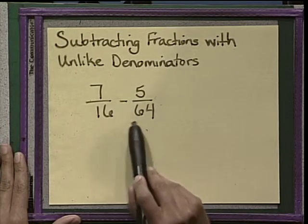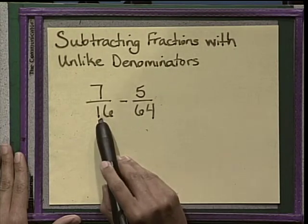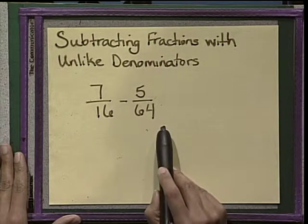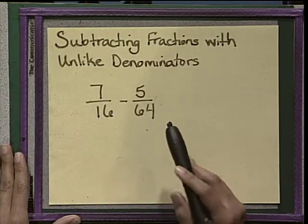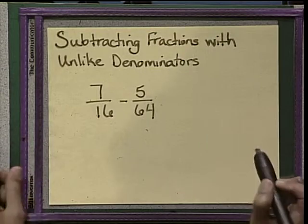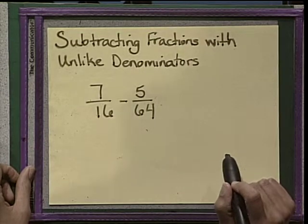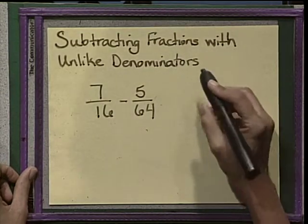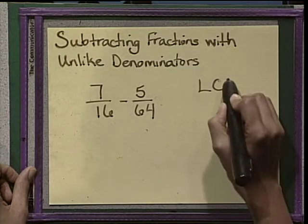These two denominators are different. One is 16 and one is 64. Now these are definitely larger than 3 and 4, so we are not going to multiply them.